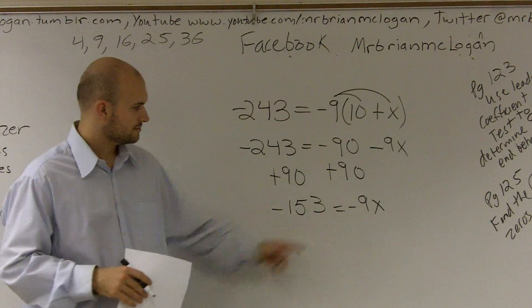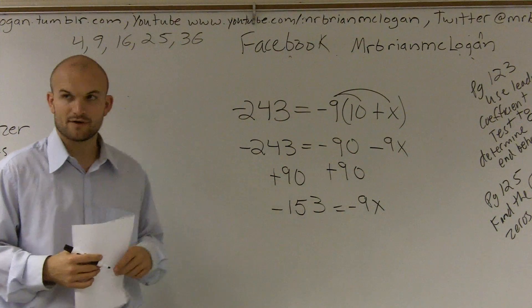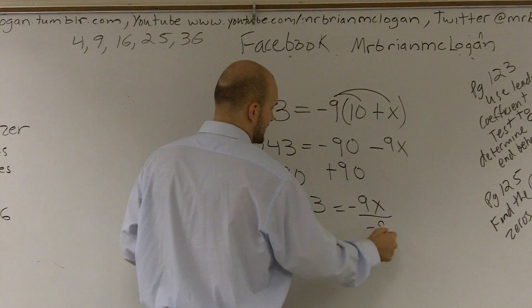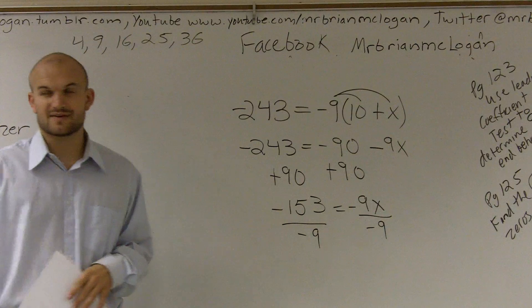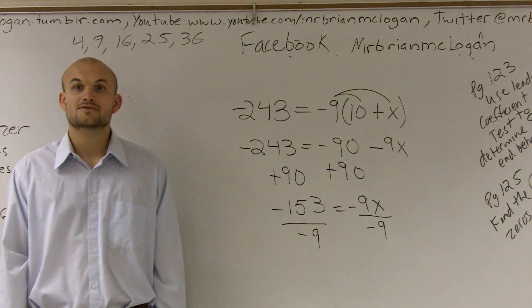Now, we need to determine. Now, we need to undo what's happening to our variable, which is multiplied by negative 9, so we need to divide by negative 9. Crap. This is a lot of extra stuff, isn't it? Oh, crap, right?